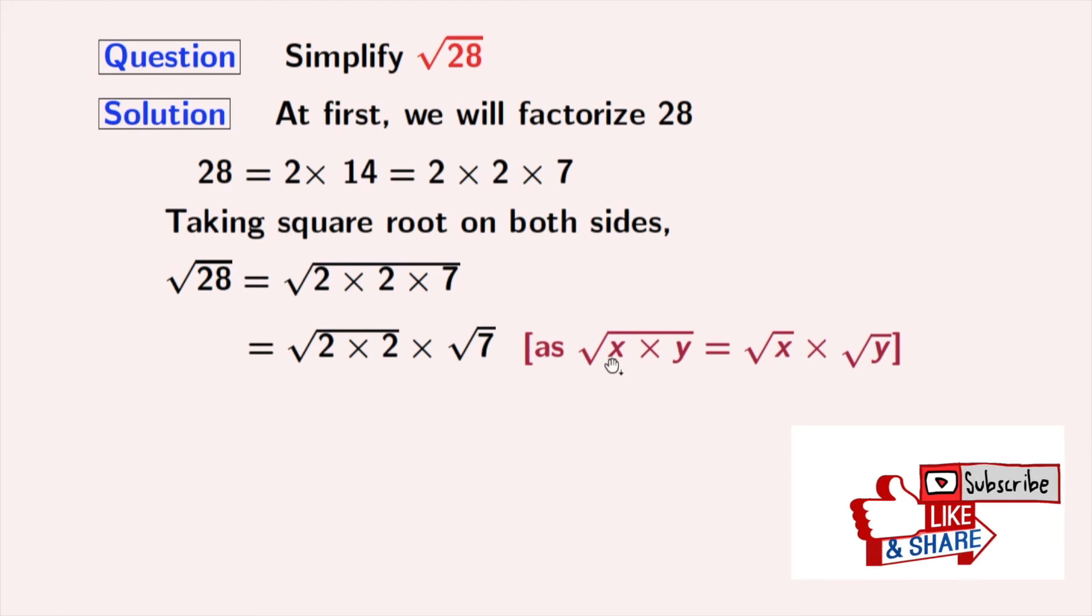The rule which we used is square root of x times y is equal to square root of x times square root of y. Here, x is 2 times 2 and y is 7.